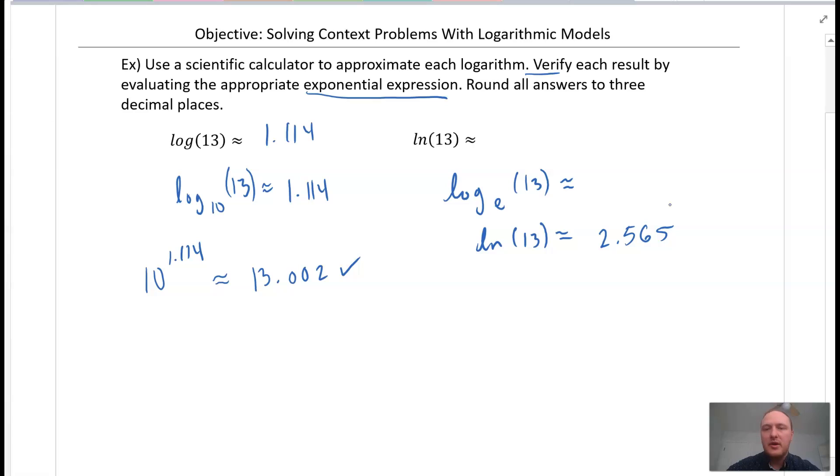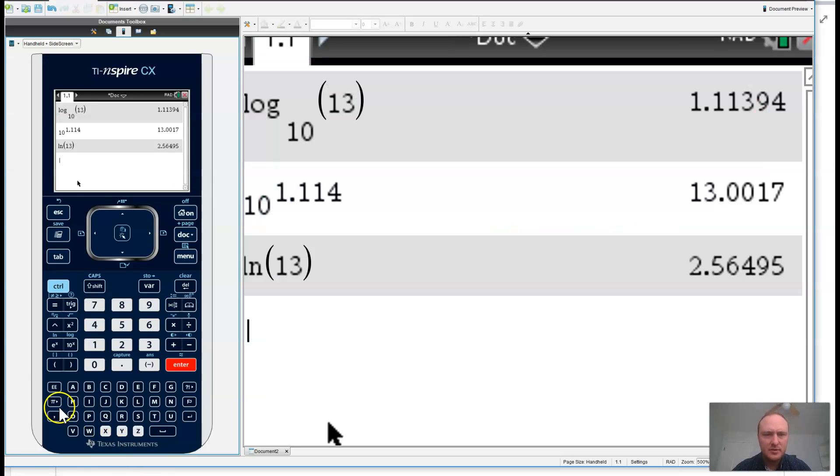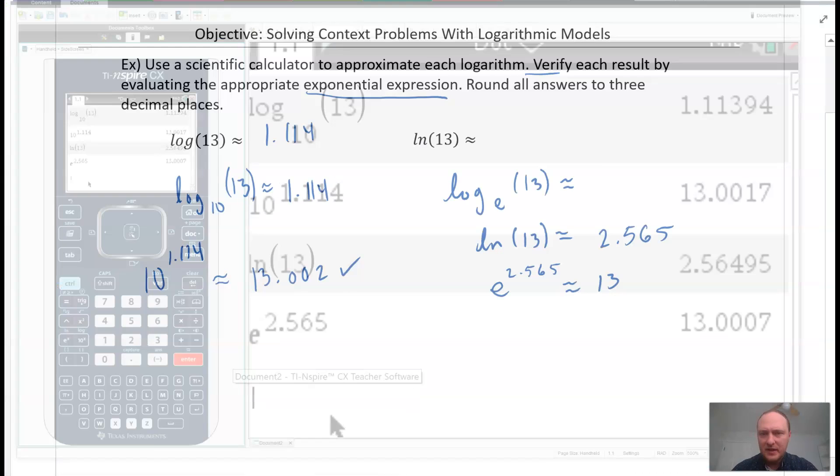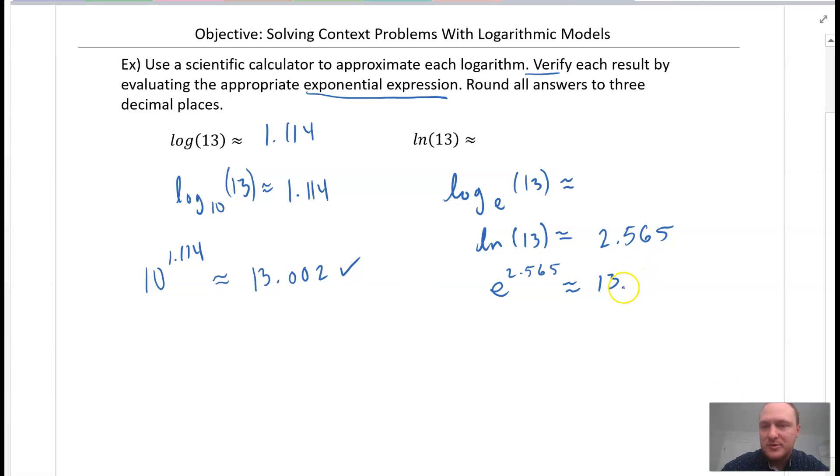I hit this as an exponential, so base e raised to the power of 2.565, is this approximately 13? So we'll check e to the power of 2.565. It is approximately 13. So that is accurate, which we would expect it to be. So 2.565.